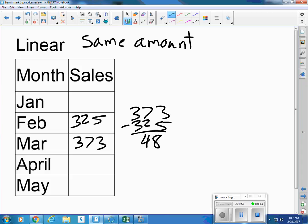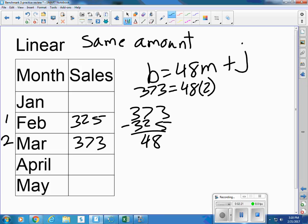So we can write an equation that says that the number of boards is going to be 48 higher every month starting at January's amount. And we can plug in, so this will be month 1, this will be month 2. So if I plug in 373, for example, then I have to use the number of months of 2. And 48 times 2 is 96. So 373 equals 96 plus j. So I subtract the 96.